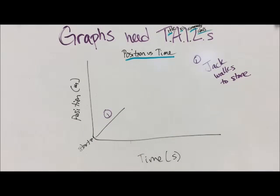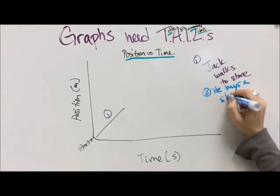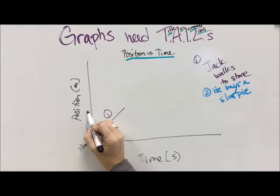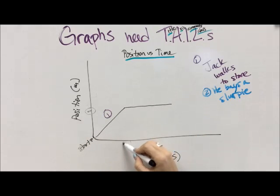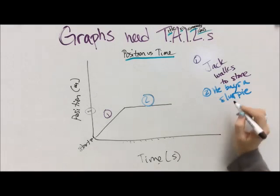He walks to the store, number two, he buys a slurpee. Now while he's at the store, he's not moving any closer to or farther away from his starting point, so his position is going to stay the same. But time keeps marching on. Time always marches on. So here he buys a slurpee.